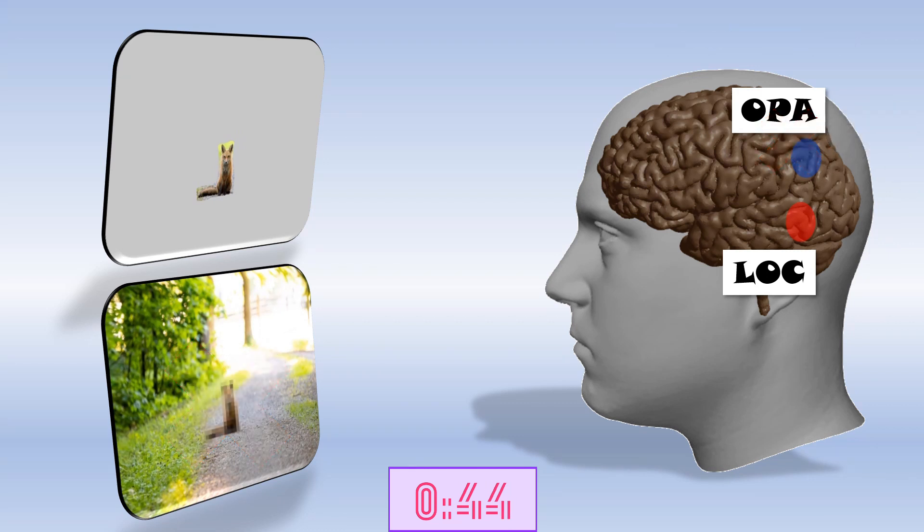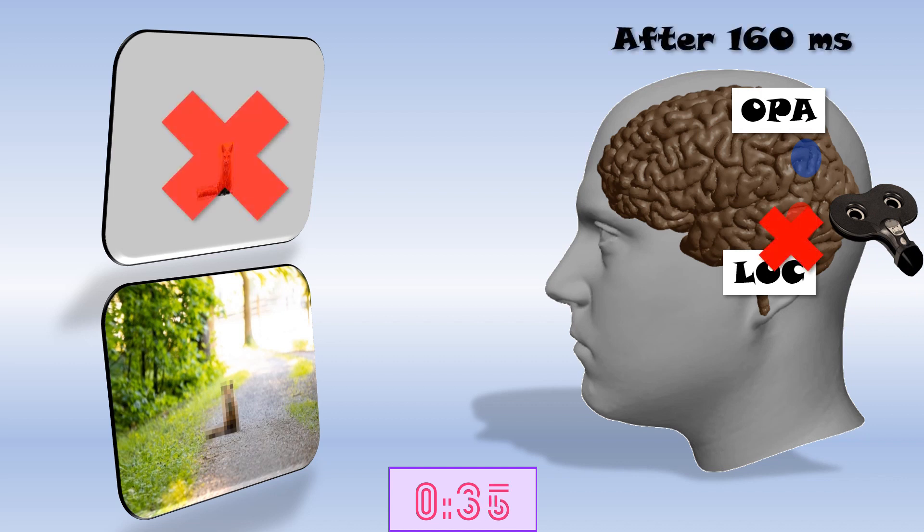Indeed, additionally they found that the object-sensitive LOC is activated at two time points. First, after 160 milliseconds after seeing an image. At this time, the LOC processes isolated objects.